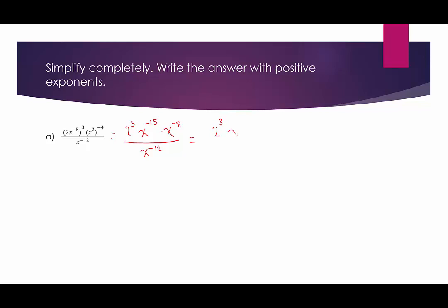We're going to move the x to the 12th up, and down in the denominator will be x to the 15th times x to the 8th. Now I would look at the numerator and simplify it, then the denominator, and then look at numerator and denominator together.